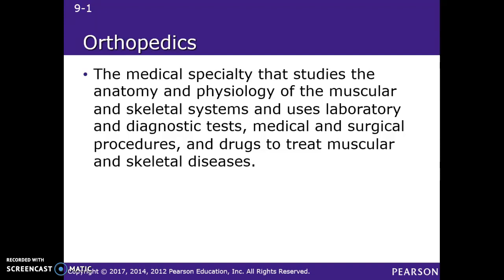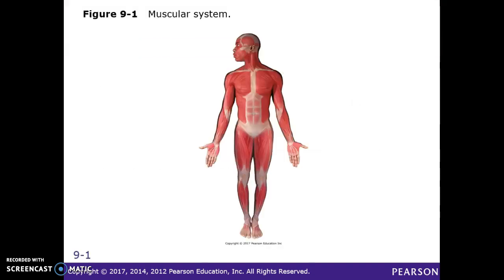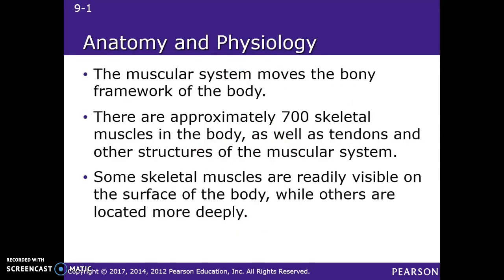Orthopedics, as you recall from last week, is the study of the anatomy and physiology of the muscular and skeletal system. So last week was the skeletal system. This week we are now looking at the muscular system, which has to work in conjunction with the skeletal system to be able to move the body. As we talked about last week regarding how many bones there were in the body, there are even more muscles, including the tendons and other structures that go along with the muscles themselves.